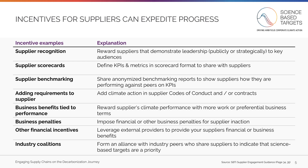As more customers signal this is a priority, it is more likely suppliers will take action. There are many incentives you can choose from, and you should select the ones that you think will have the biggest impact. Once selected, you should communicate incentives to your suppliers clearly and consistently, and can even consider layering in more incentives over time to enhance overall impact.